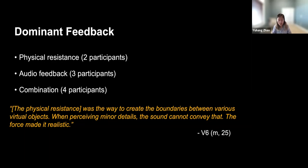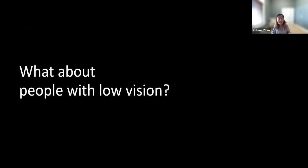That was the research about Cane Controller, where we designed a haptic controller to enable people with visual impairments to freely navigate a virtual space. But this work mostly focused on people with very limited vision and didn't consider visual feedback. We didn't consider another very important group — people with low vision — who still prefer using their functional vision and actually represent about 90% of people with visual impairments.